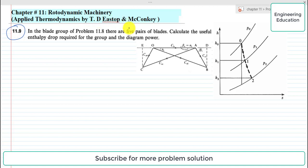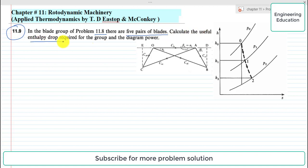The statement of the problem is: in the blade group of problem 11.8 solved, there are five pairs of blades. Calculate the useful enthalpy drop required for the group and the diagram power.